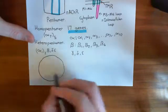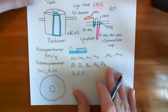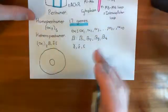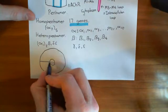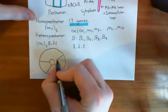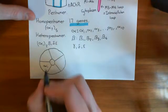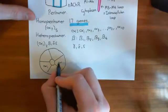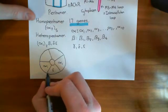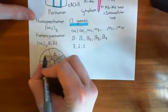Here is the receptor viewed from the top — we are looking down from above. You have these five subunits making up the nicotinic acetylcholine receptor: 1, 2, 3, 4, 5. You have one alpha-1 subunit here and the other alpha-1 subunit there. In between them is the epsilon subunit, up here is the beta-1 subunit, and there is the delta subunit.